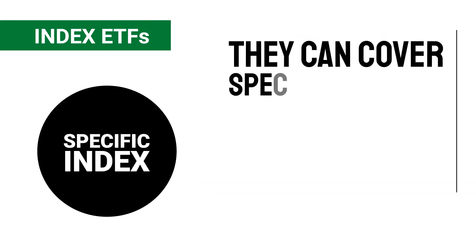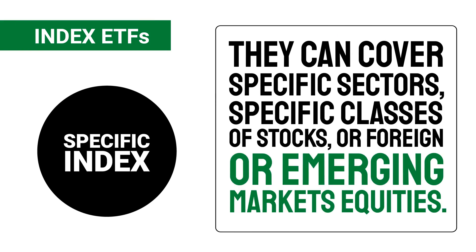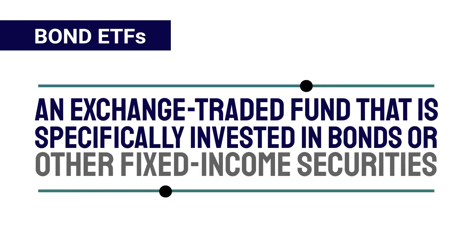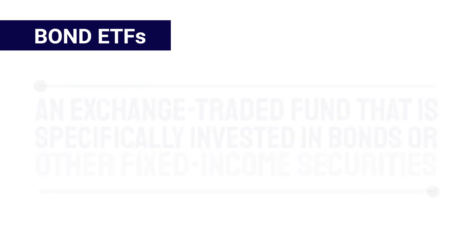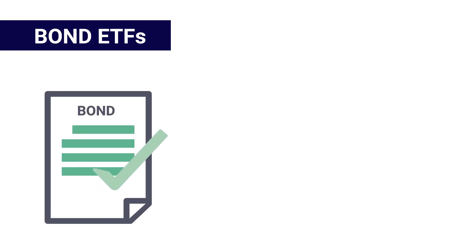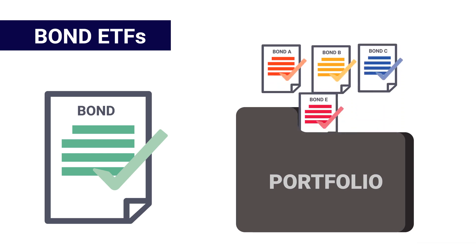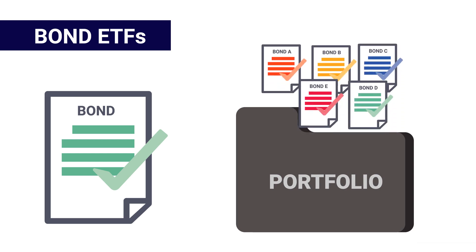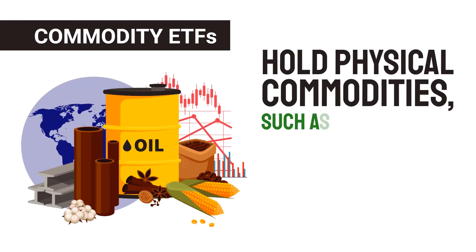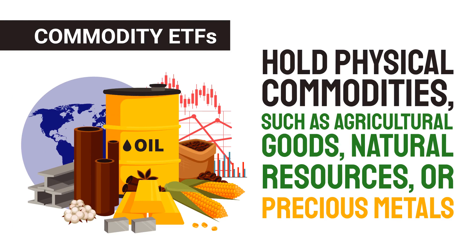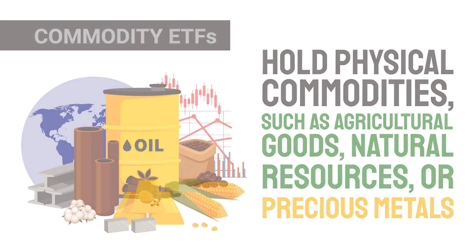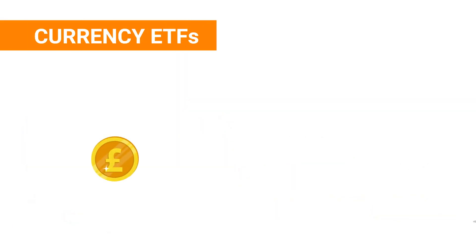Index ETFs can cover specific sectors, specific classes of stocks, or foreign or emerging markets equities. Bond ETFs are exchange traded funds specifically invested in bonds or other fixed-income securities. They may be focused on a particular type of bond or offer a broadly diversified portfolio of bonds of different types and with varying maturity dates. Commodity ETFs hold physical commodities such as agricultural goods, natural resources, or precious metals.